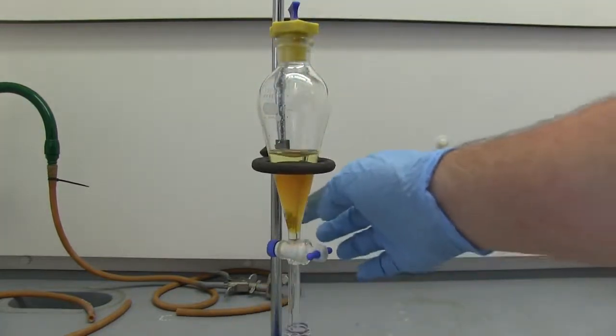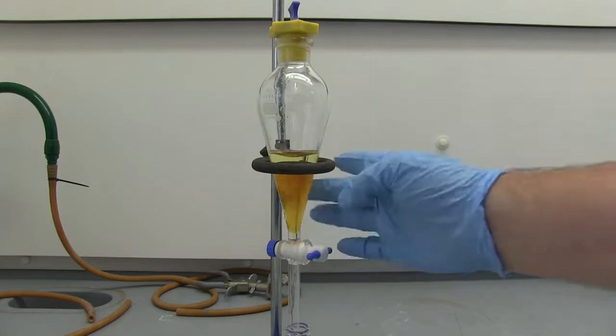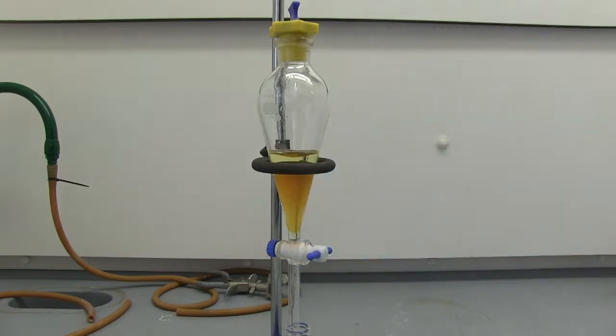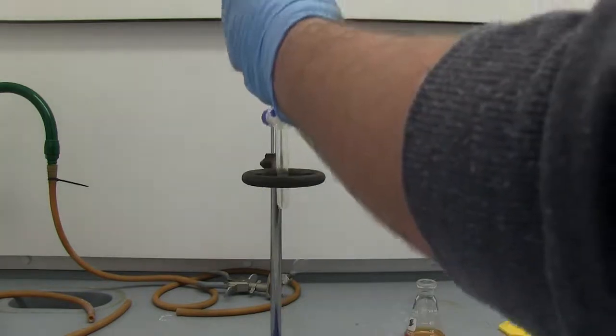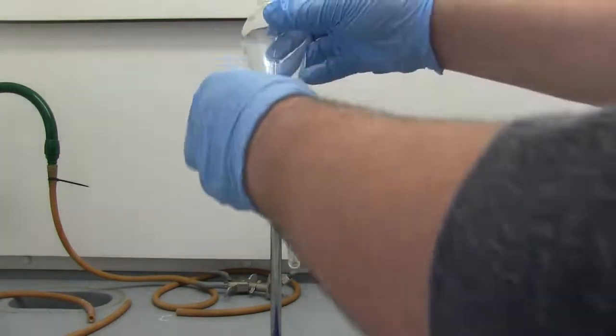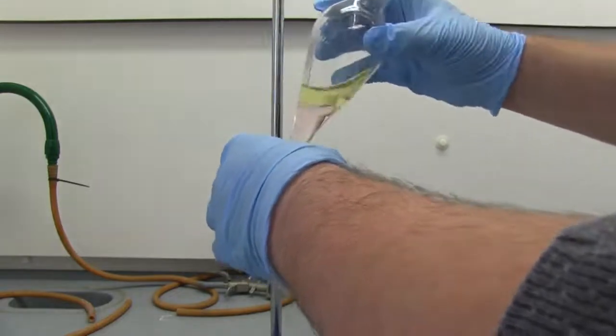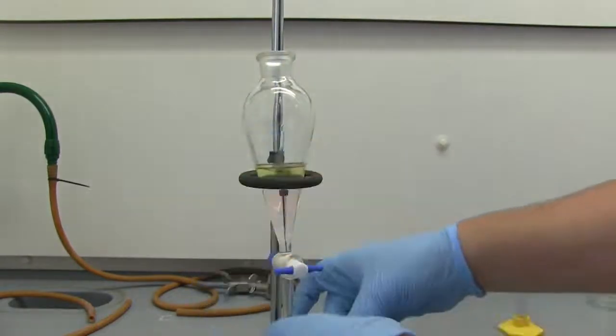All right, so first we're going to drain off this bottom layer, set it to the side, and we'll get our DCM layer, which is just the other layer. All right, so now we're going to add another 10 mL of dichloromethane and re-extract. All right, so our DCM layer is in the bottom and we're going to combine that with our previous DCM extract.